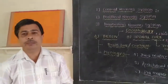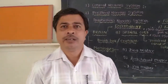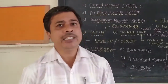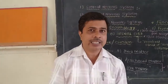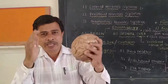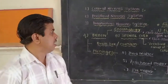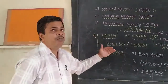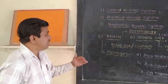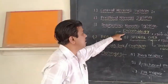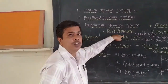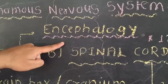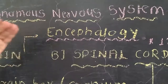The brain is the main important and vital organ of our body. It is present in the head region, inside the skull. The study of the brain and all its parts is a branch of biology known as encephalogy. Encephalogy is the branch of biology which deals with the study of all parts of the brain.